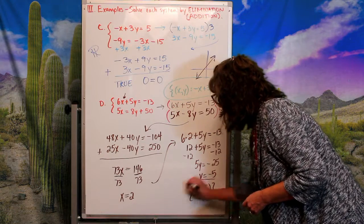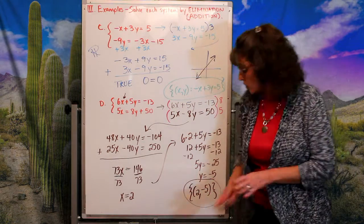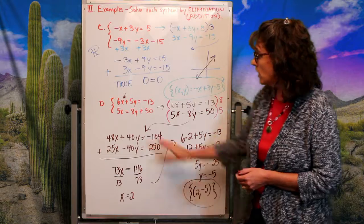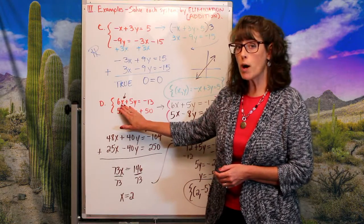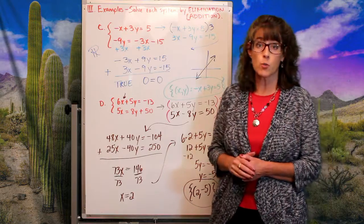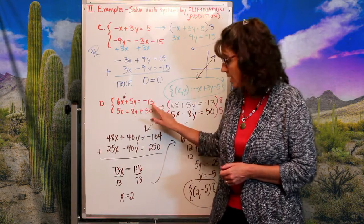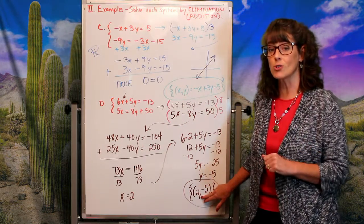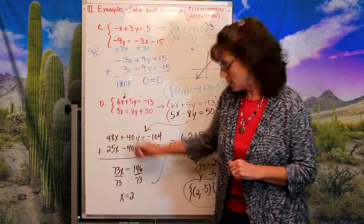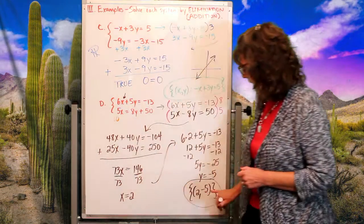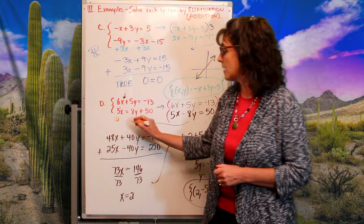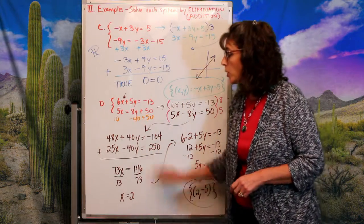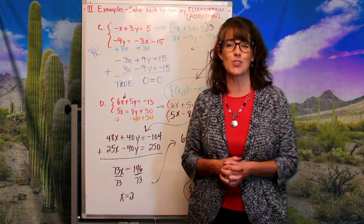This solution must work in both equations. Checking the top: 6(2) + 5(−5) = 12 − 25 = −13. Yes, it works. Checking the bottom: 5(2) − 8(−5) = 10 + 40 = 50. Yes, that works too. So (2, −5) is confirmed as a solution to the system.